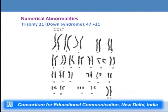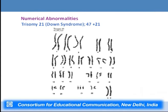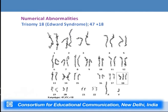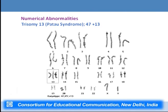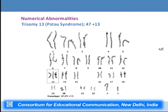Several syndromes result from numerical abnormalities. Down syndrome results from trisomy 21 — chromosome 21 is present in three copies, as seen in the karyogram. Edwards syndrome is caused by trisomy 18, and Patau syndrome is caused by trisomy 13, with chromosome 13 present in three copies. All these occur because of non-disjunction of chromosomes.